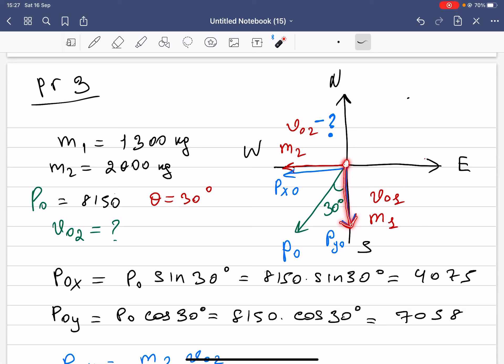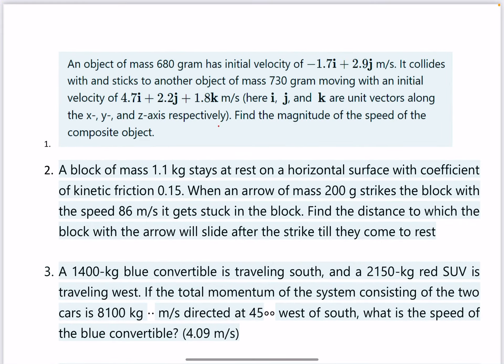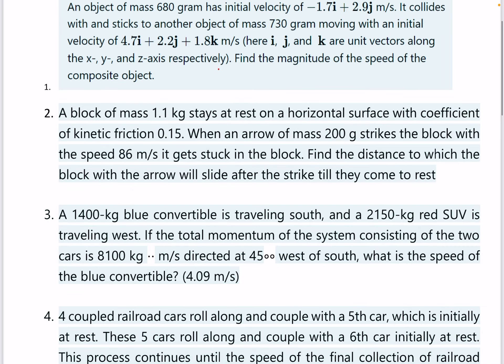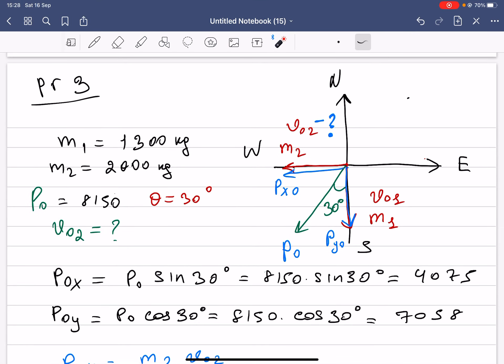Then we have mass two, which is the SUV, moving to the west. Let's forget that it's 45 degrees. Instead of 45 degrees, let's take it as 30 degrees west of south, so 30 degrees with this one.